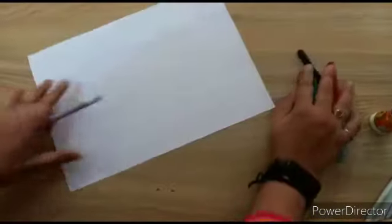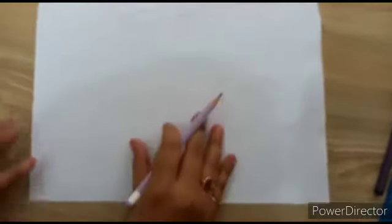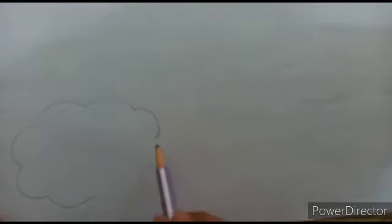First we will start with the pencil and make a cloud. Students, if you find it difficult, take the help of your mama. We will start with a curve line — a C curve — like this. See, like this. Okay, this one cloud is ready.